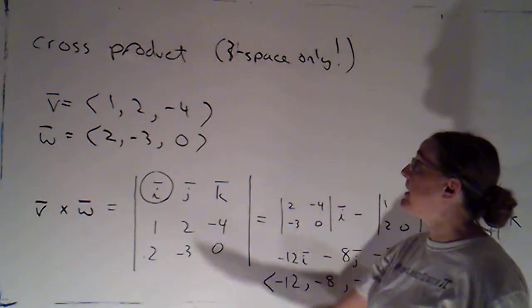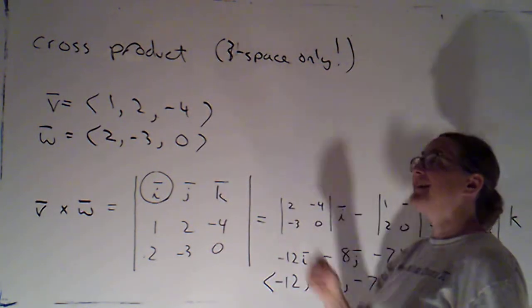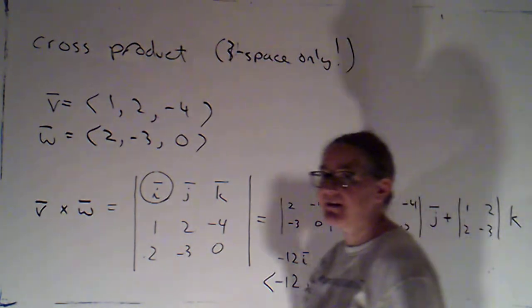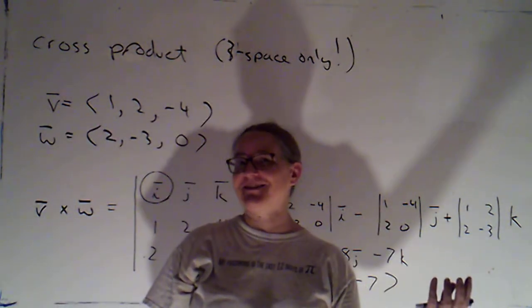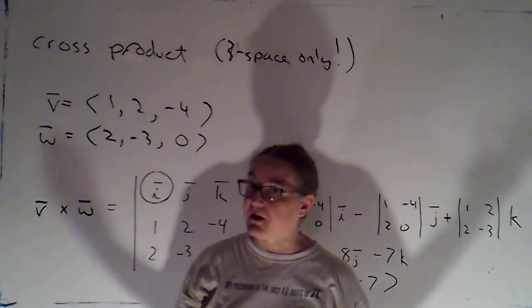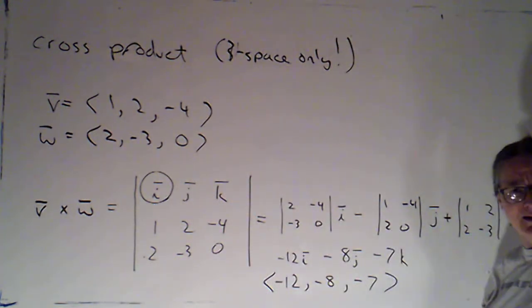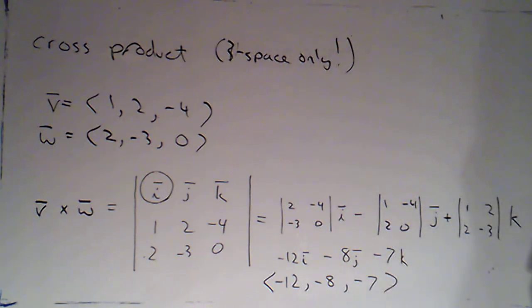Two very important things. One, it only works in 3 space. Two, it is not a full-on generalization of multiplication as we know and love it. Some things that are true of multiplication in the real numbers are not true of the cross product in 3 space. And we'll start working through what this means and why we might want to do it. It actually turns out to be very useful. But it's not at all obvious from the definition that this would be useful in any way, shape, or form. So we've got a lot of work ahead of us.